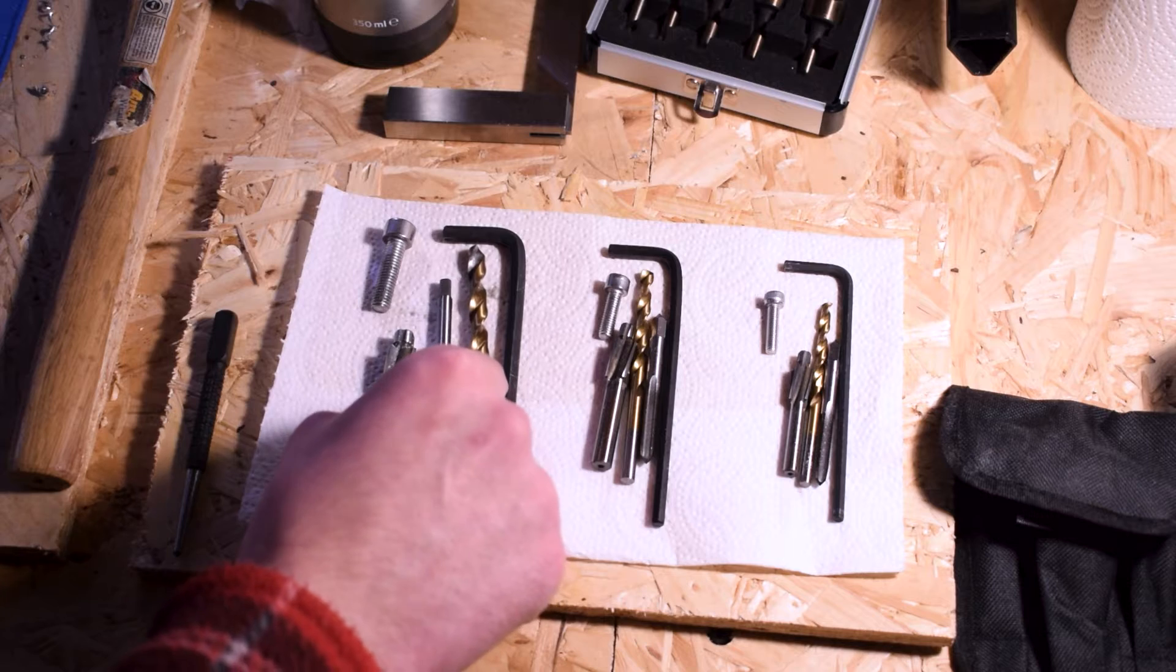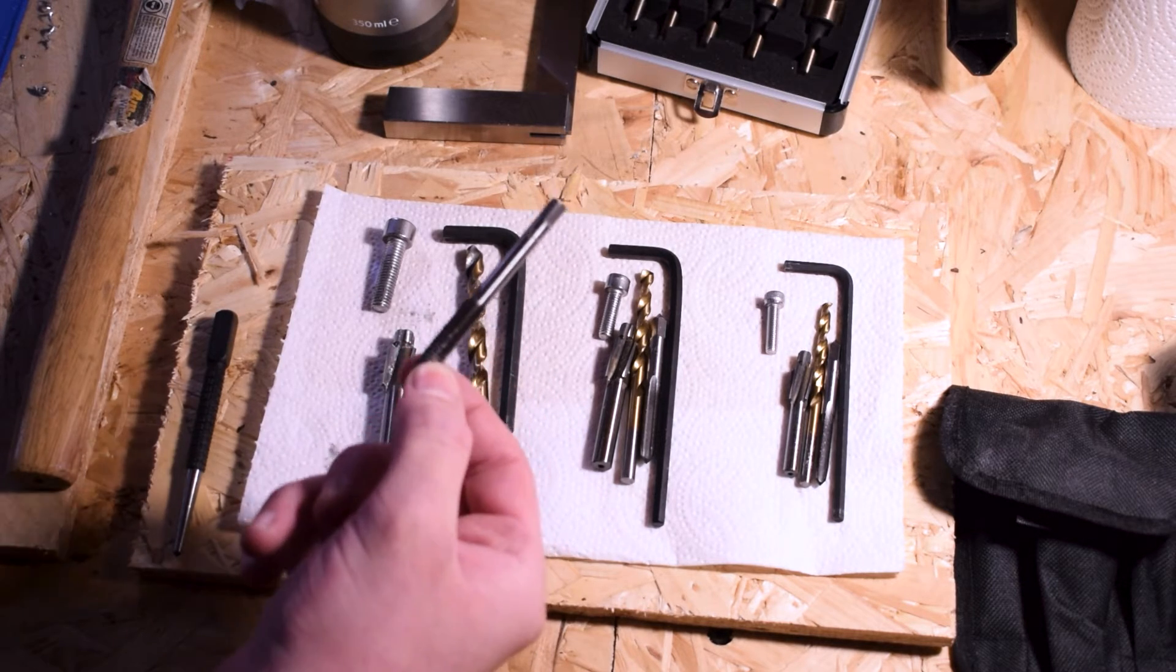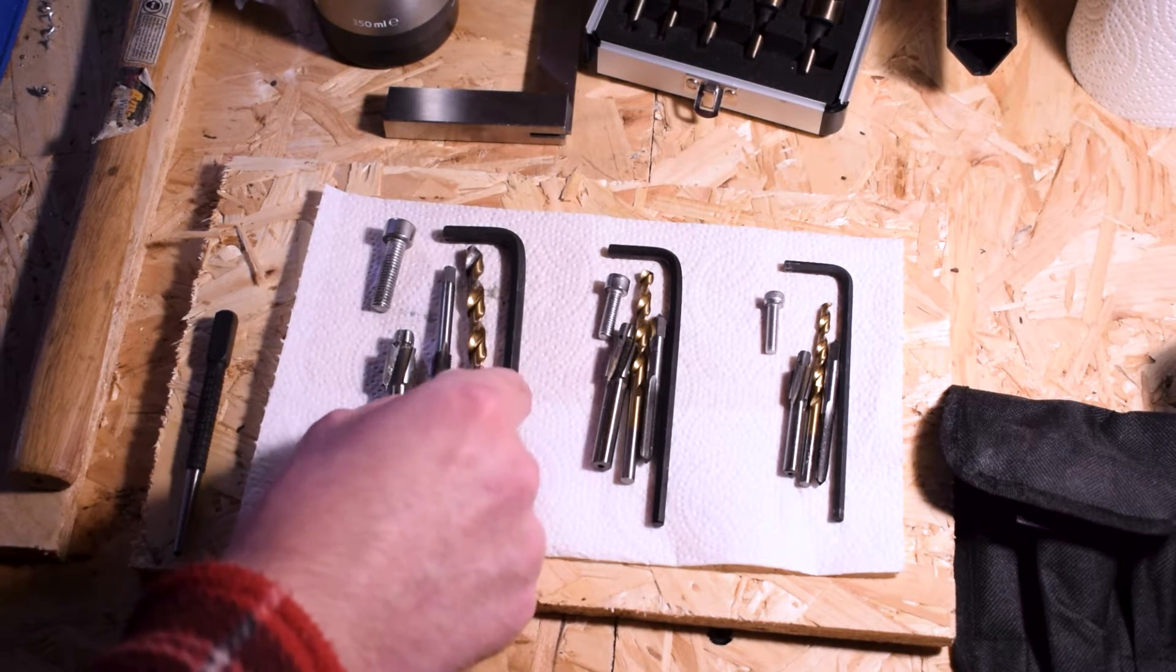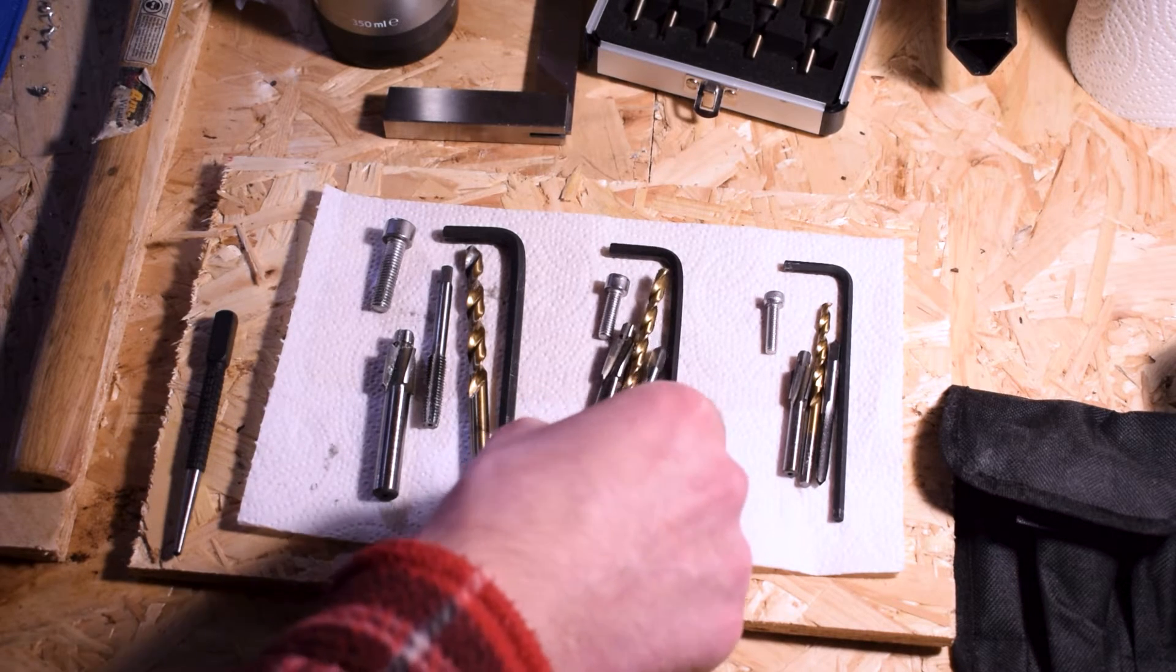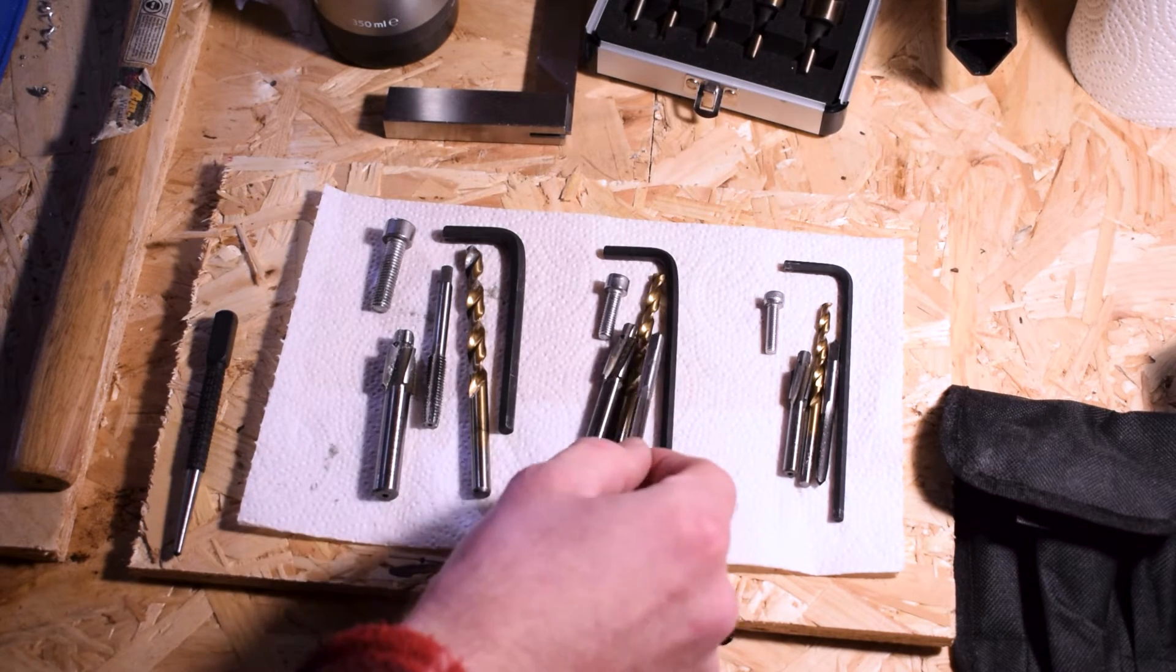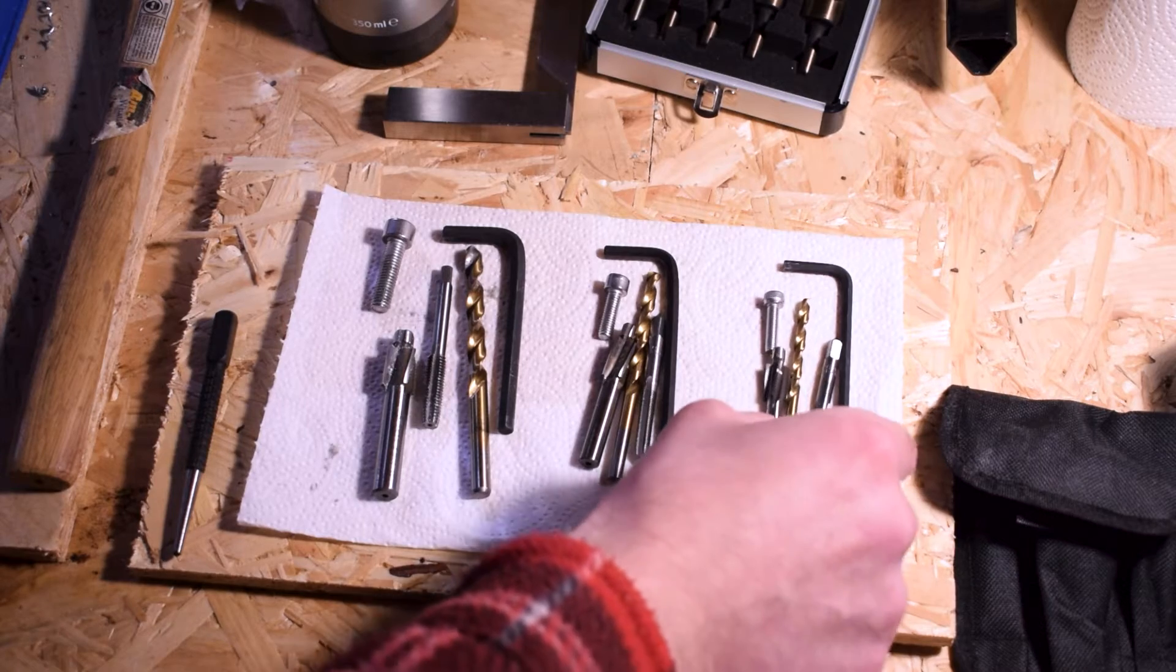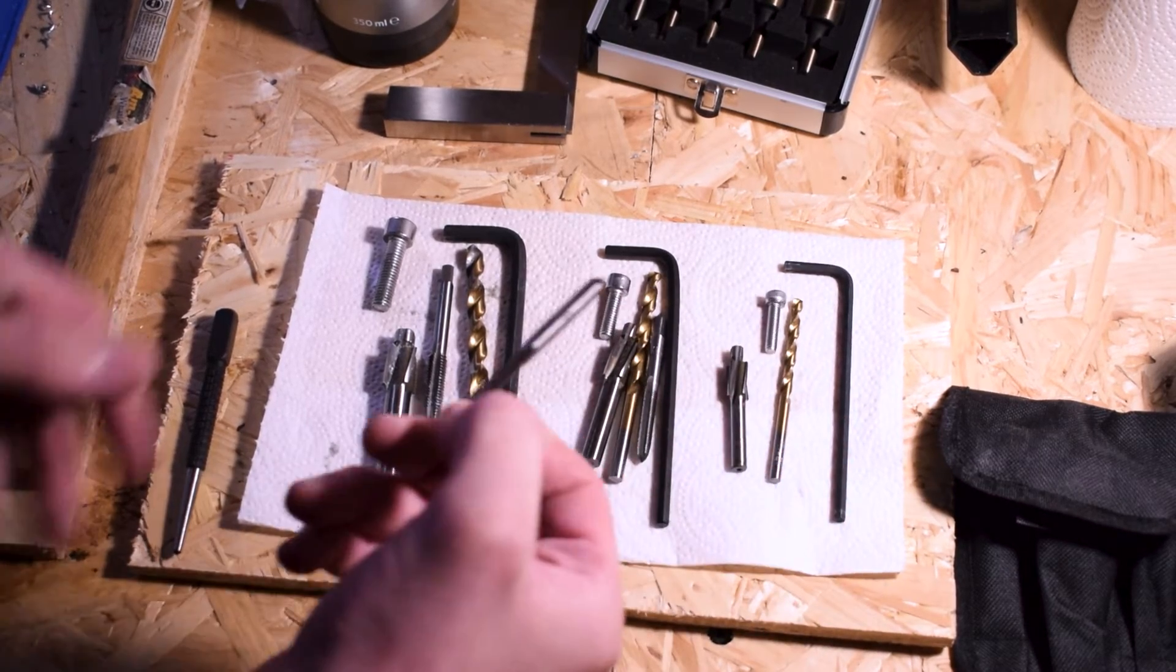Correspondingly, we've got the taps: the M8 tap which will allow us to create a thread in the aluminum, the M6 tap, and the M5 tap which is a little bit smaller.